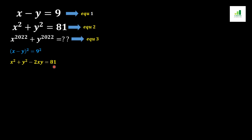In the next step, we subtract equation 2 from this expanded equation. The x squared terms cancel, the y squared terms cancel, and the 81 and 81 cancel out, leaving us with negative 2xy equals 0, so 2xy equals 0.